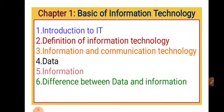Then we discussed data. Data is also called as raw material — with the help of data we can provide input to the computer system. After that we saw the definition of information. Basically, processed data is called information, and information is the final output of our input. And finally we discussed the difference between data and information. All these concepts we discussed in the last lecture.